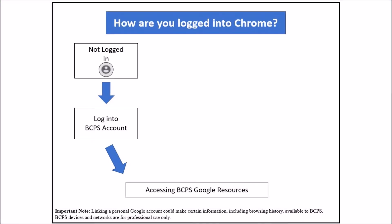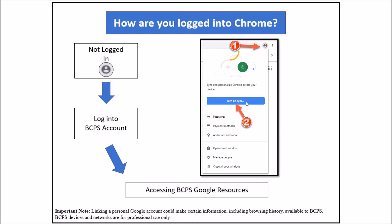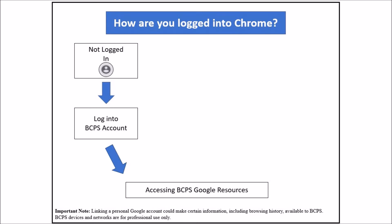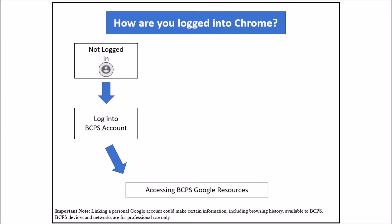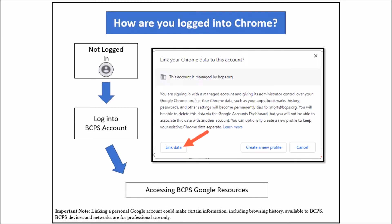If you are not logged into Chrome, you will see the generic gray user icon. Click on the icon in the top right corner and select turn on sync. Then log in with your full BCPS email address and password. A message will appear to link your Chrome data.